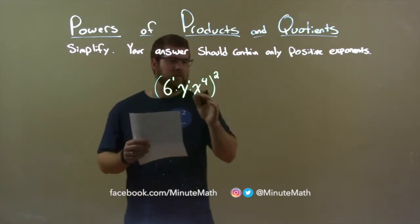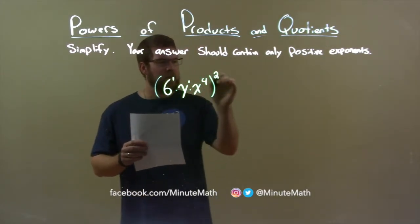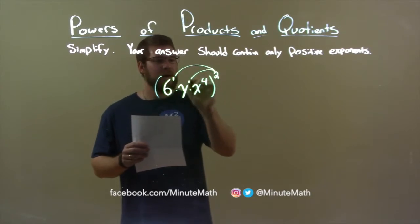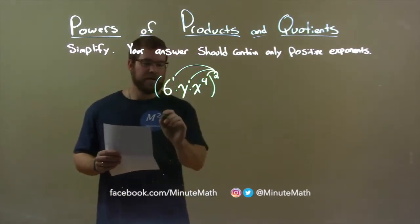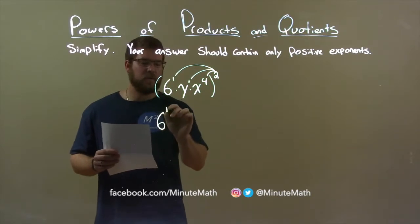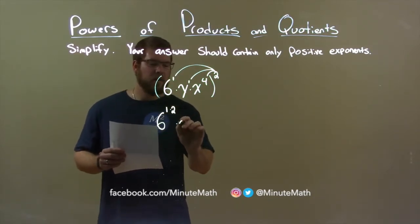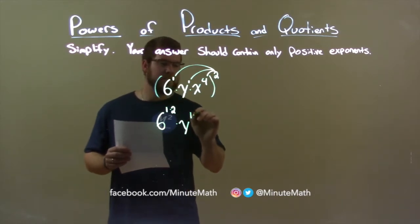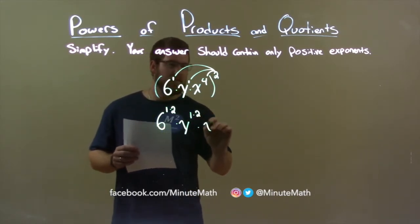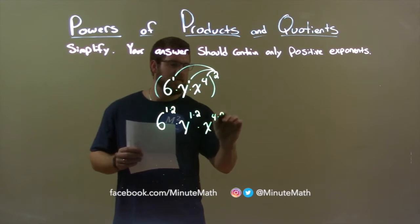When we distribute this and simplify, we take the exponent squared, and it gets multiplied to each exponent inside of the parenthesis. So, 6 to the 1st becomes 6 to the 1 times 2 power, times y to the 1st power becomes y to the 1 times 2 power, and x to the 4th is x to the 4th times 2 power.